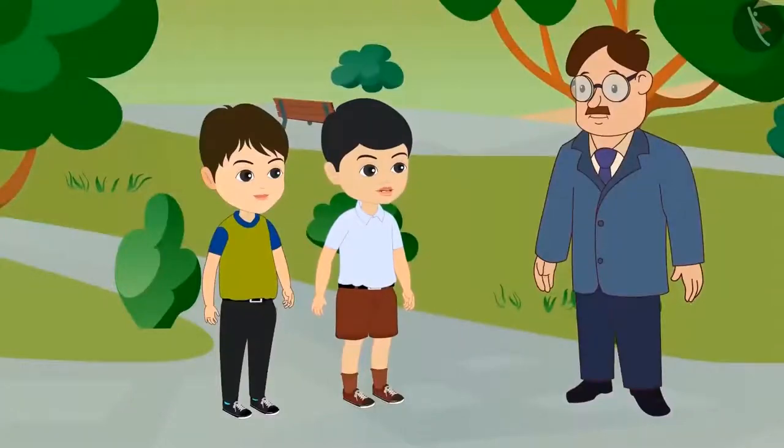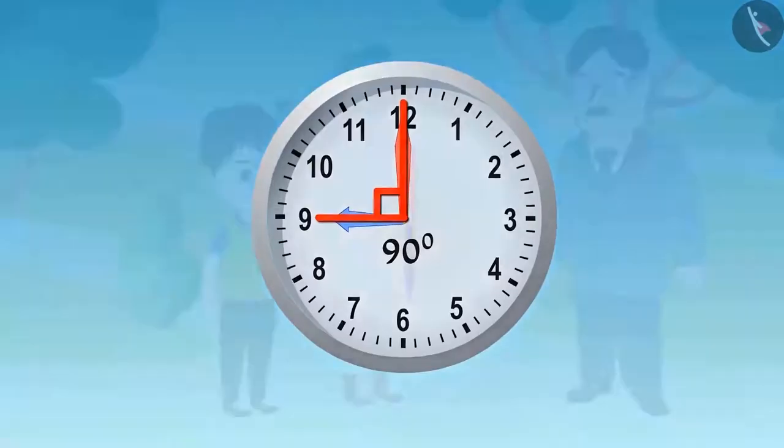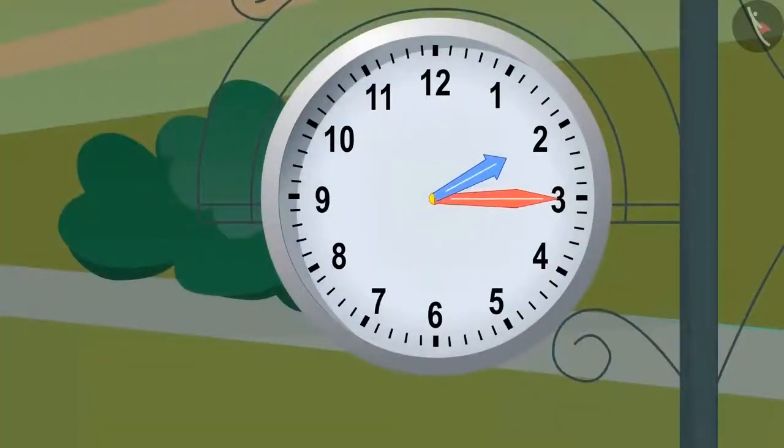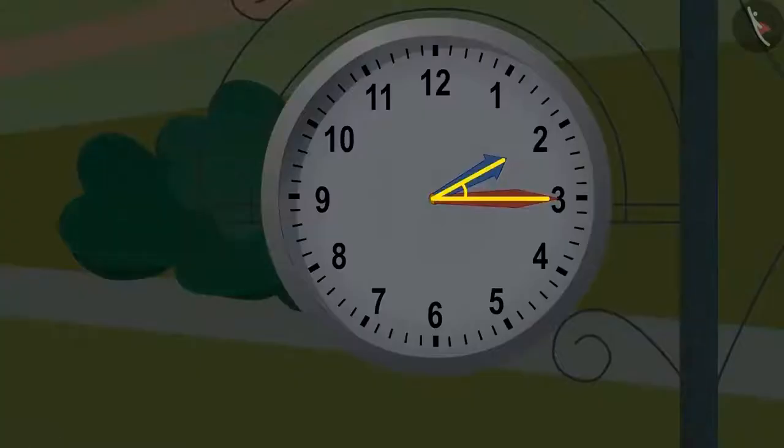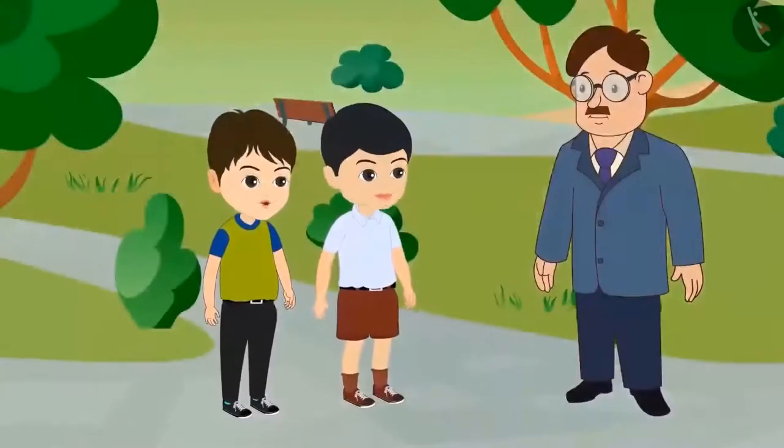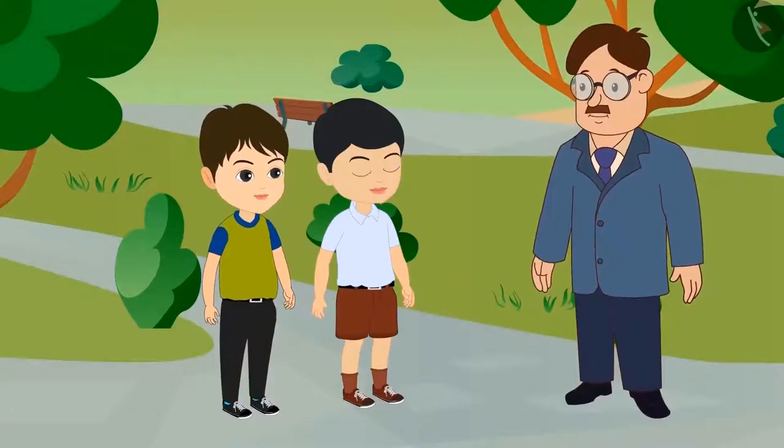Look Golu, this is a very big clock. Do you remember what we have learned about the angles formed in the clock? Yes, now the time is quarter past two. And if we look at the hands of the clock, we can see that they are making an angle less than 90 degrees. Is that correct, uncle? Yes, you are absolutely correct, Golu.